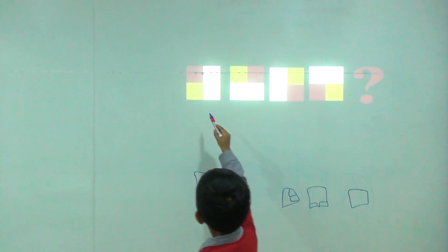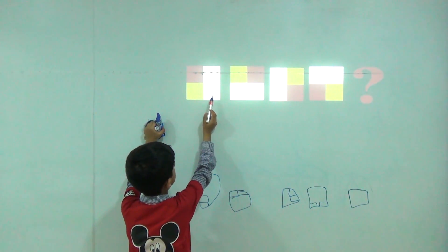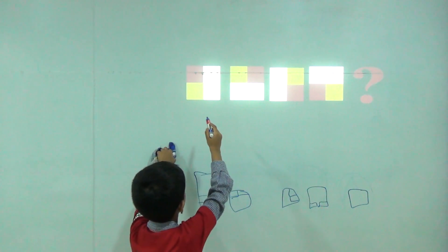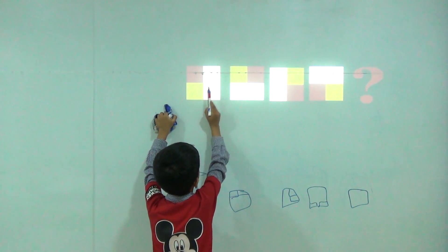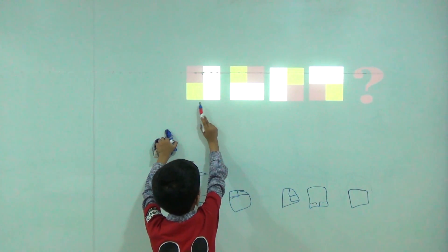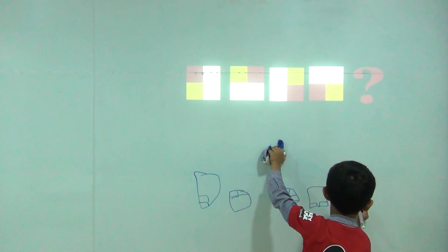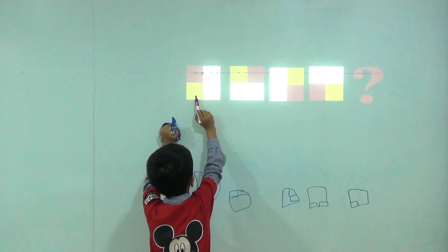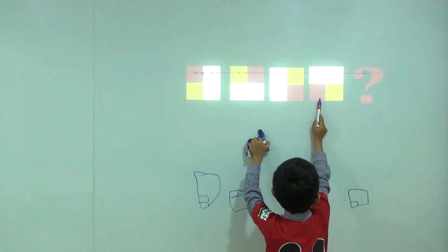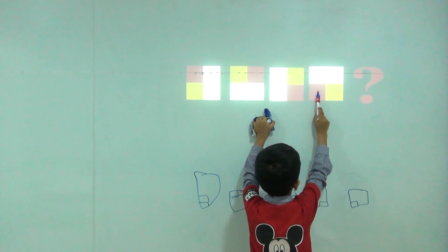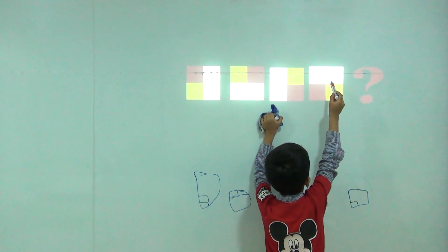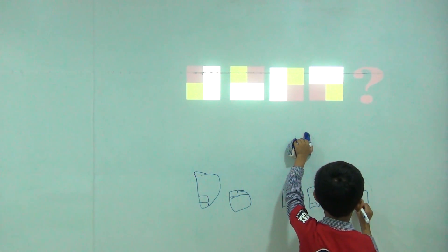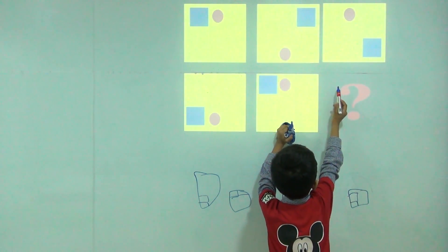First yellow is here, then it goes here. Then it is moving like a clock — first here, then here, then here, then here. Then it comes here. Then it will come here. So yellow will be here and red is going first here, then here, then here. So here is red. So red will come from here to here.